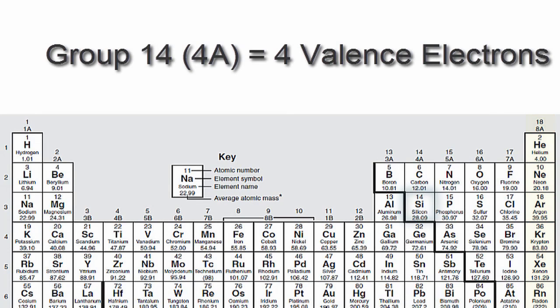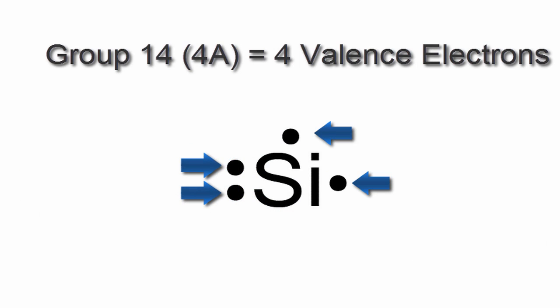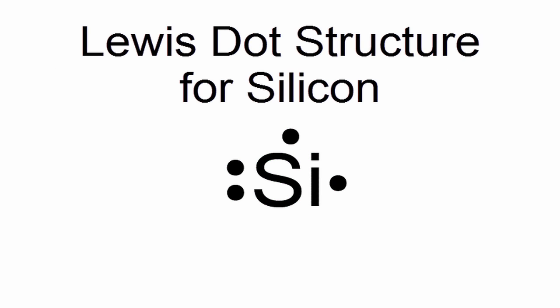Since silicon is in group 14 or 4A, it has four valence electrons. We'll put those four valence electrons around the element symbol Si for silicon. So that's the Lewis dot structure for silicon.